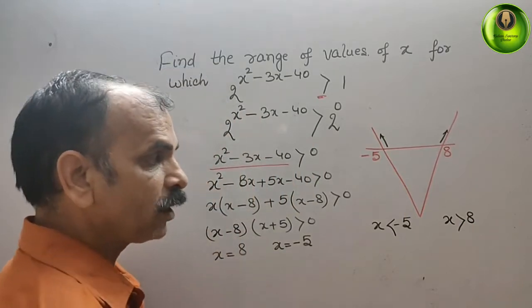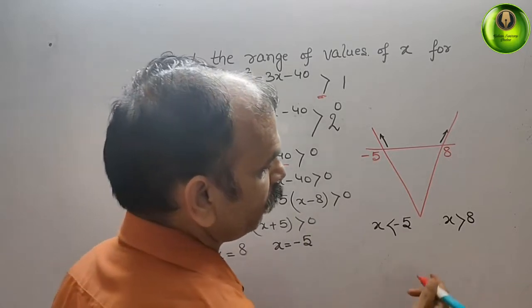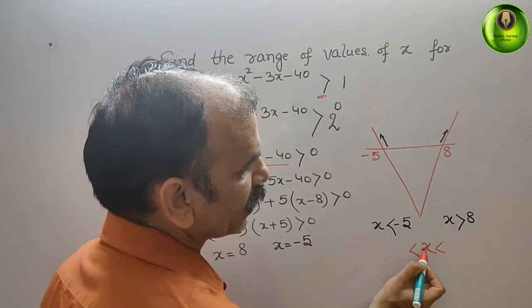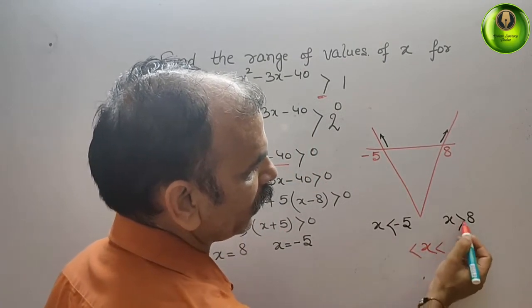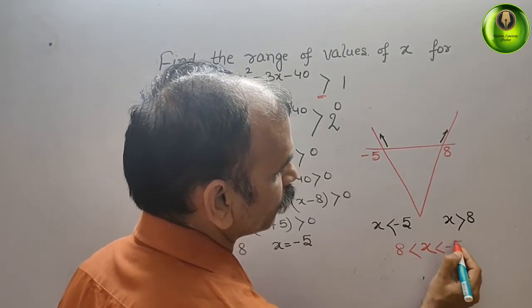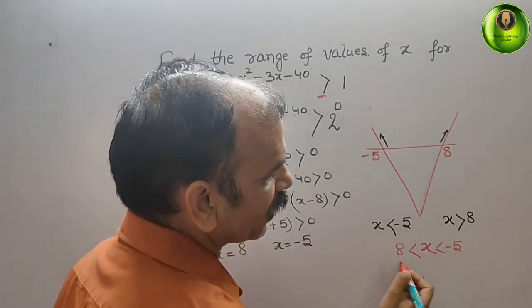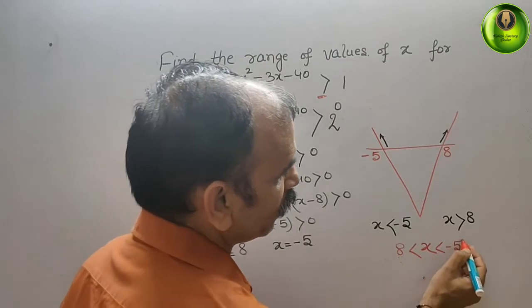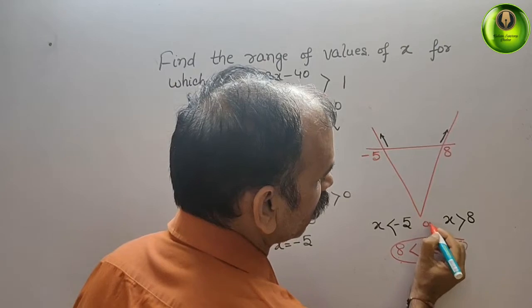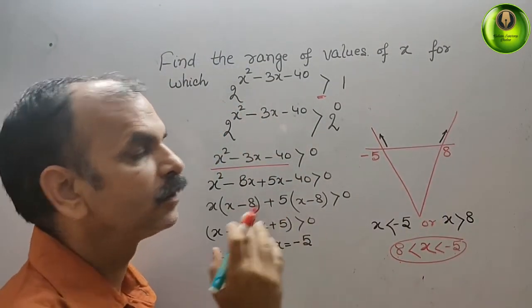Now, just we want to check that they are in relation or not. x should be greater than 8. So here comes 8, here comes minus 5. So now you can see, they are not in relation. Therefore, your answer is what? x less than minus 5 or x greater than 8. This is your answer for this question.